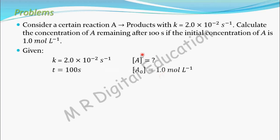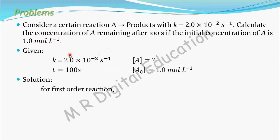In this problem the order of the reaction is not mentioned. We have to determine it by looking at the unit of the rate constant. The unit of rate constant is given as per second. Per second is the unit for a first order reaction, so this is a first order reaction.